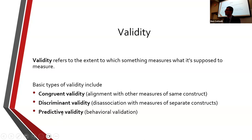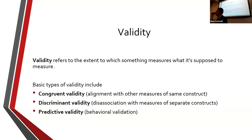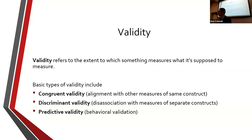Discriminant validity is making sure the measurement is not associated with something we know isn't associated with the construct we're measuring. The example I gave was that extraversion and emotional stability are not related — we know that from decades of research on multiple participants and measurements. So if I have a brand new measurement for extraversion, it should be unrelated to emotional stability, because we know those things are unrelated.